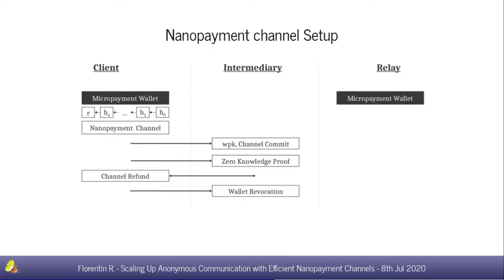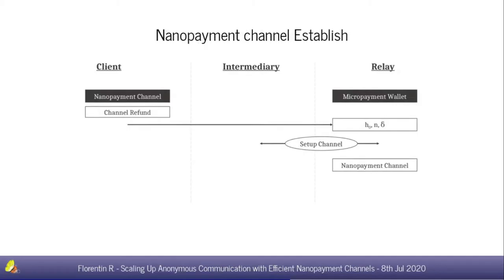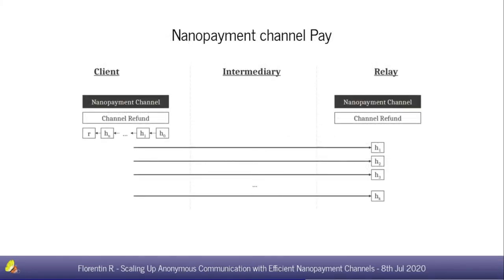The nano payment setup assumes we already ran a BOLT establishment phase to get a micro payment wallet. The setup generates a hash chain from a random value and interacts with the intermediary to prove that the nano payment channel is correctly set up. Both parties protect each other against misbehavior with channel refunds and wallet revocations. The open channel phase is a three-party protocol in which the client sends nano payment tokens containing the last value of the hash chain computed at setup. The relay sets up their part of the channel with the intermediary, rooted to the same value h0, marking successful channel establishment.